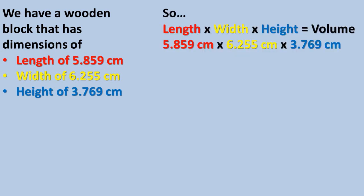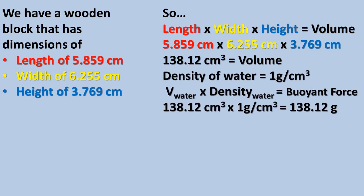Being the block is fully submerged, we need to find the total volume of the block. So if we take the length times the width times the height, we get a volume of 138.12 centimeters cubed of water displaced by the block. Now, if we take the volume of water and multiply times the density of water, we get the buoyant force of 138.12 grams force.